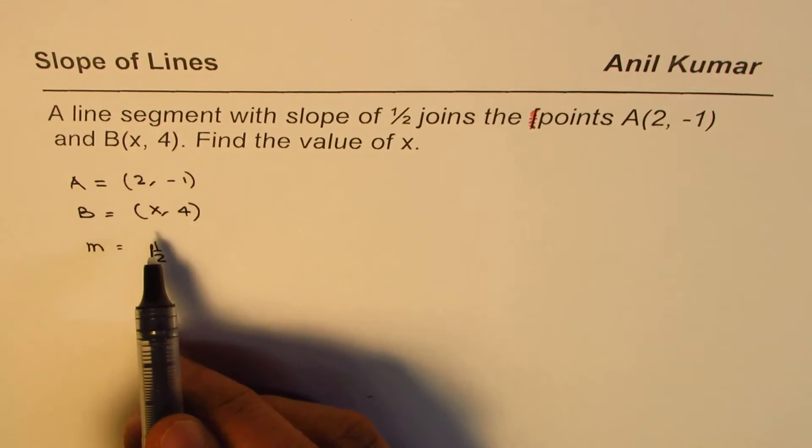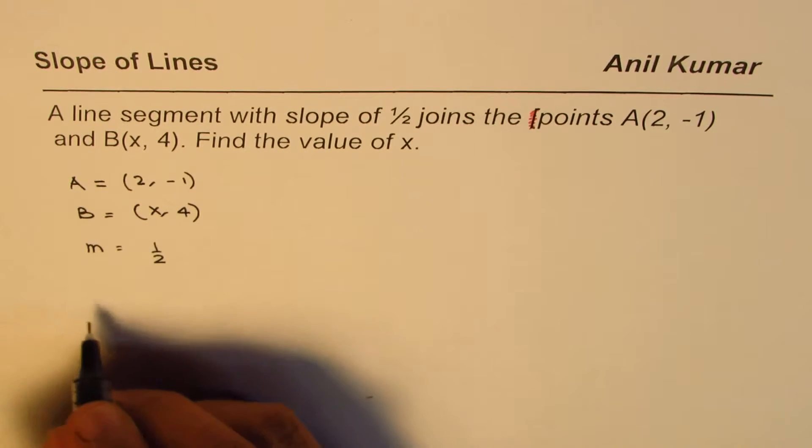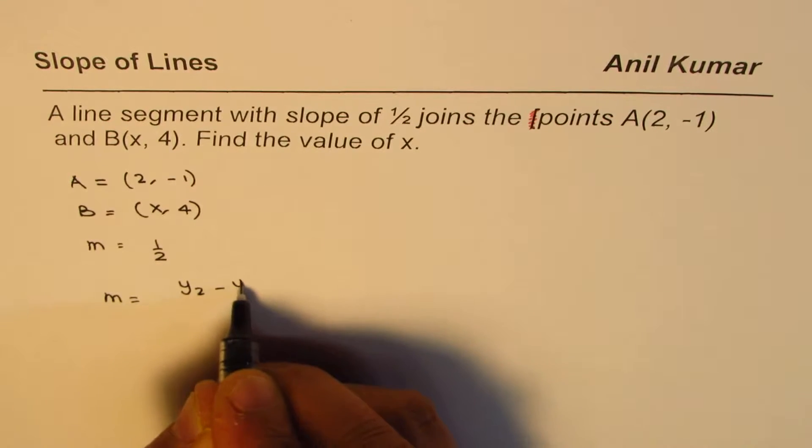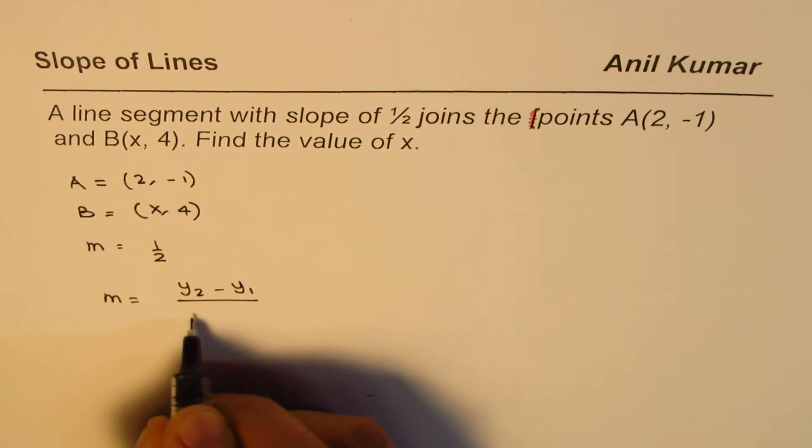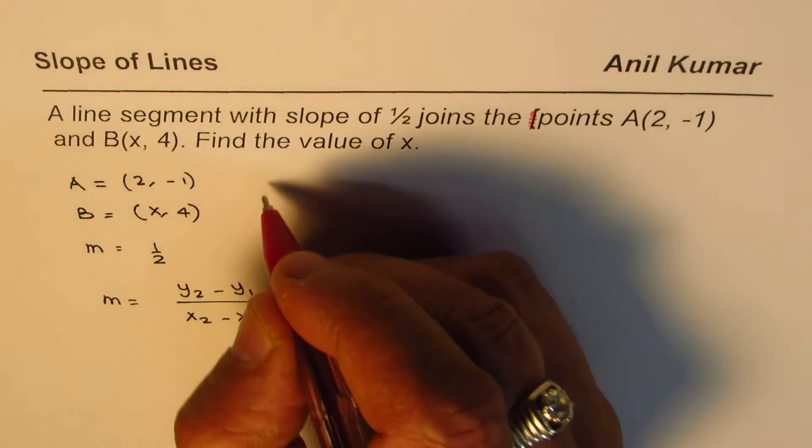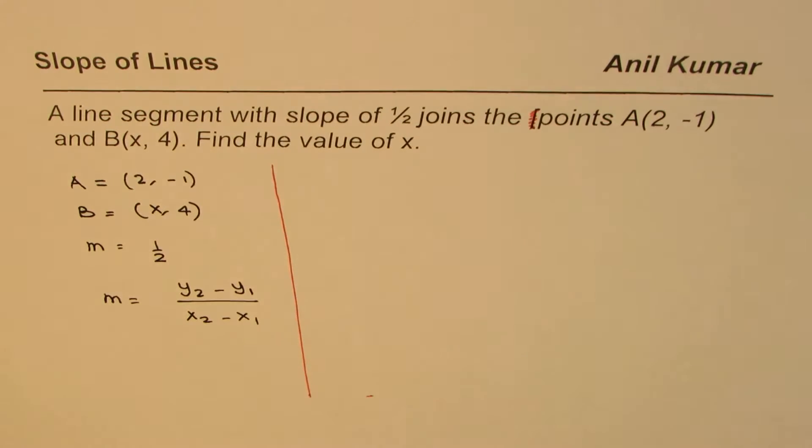Now, the relation between the two points and the slope is that slope equals the difference of y values divided by difference of x values. So this ratio is actually rise over run, and it is slope. We can use this relation to find the value of x.